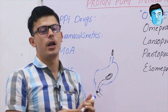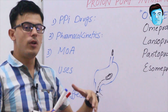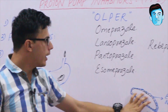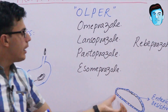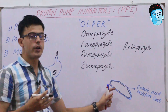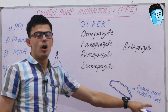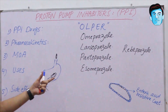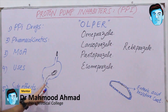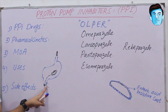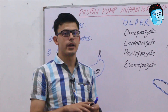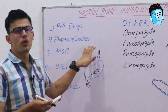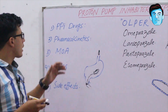Once absorbed in the duodenum, the PPI travels to the parietal cell, where it acts on the hydrogen-potassium ATPase pump and inhibits it, decreasing gastric acid secretion. So in summary: PPI is taken orally, has an enteric acid-resistant coating to escape the gastric acid, gets absorbed in the duodenum, reaches the parietal cell, and inhibits the H+/K+ ATPase pump.